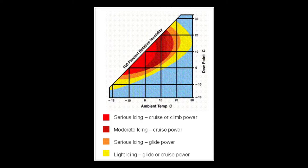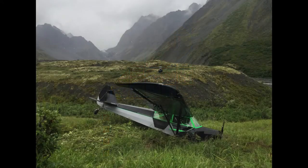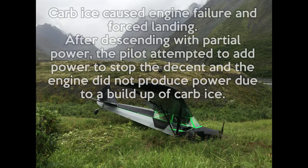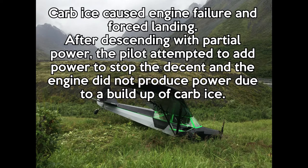At higher altitudes, you'll see lower manifold pressure settings even at full power on a naturally aspirated engine. If you still had carburetor ice and applied full power near a thousand feet but only saw 25 or 26 inches instead of the expected 28 or 29 inches, that's a clue carburetor ice remains and you need to turn carb heat back on. If running carb heat for an extended period, consider leaning the engine to prevent spark plug fouling from the overly rich mixture caused by less-dense heated air.